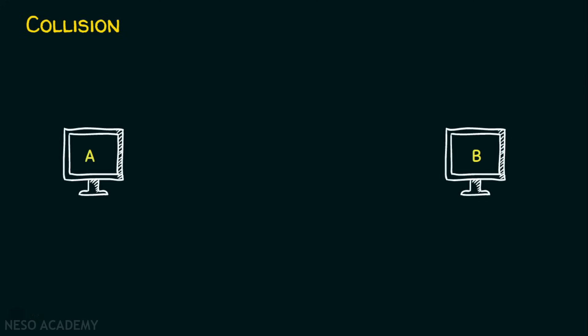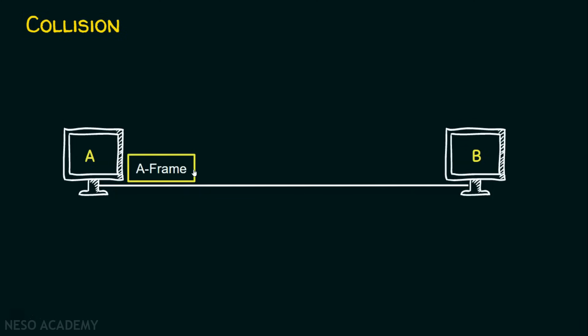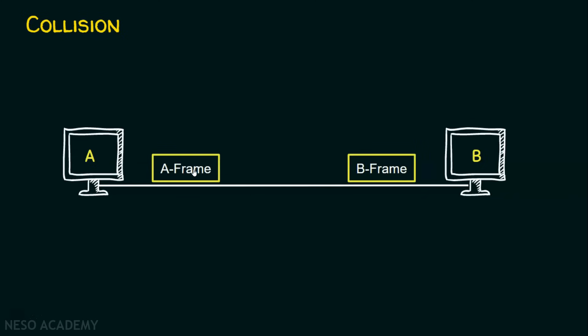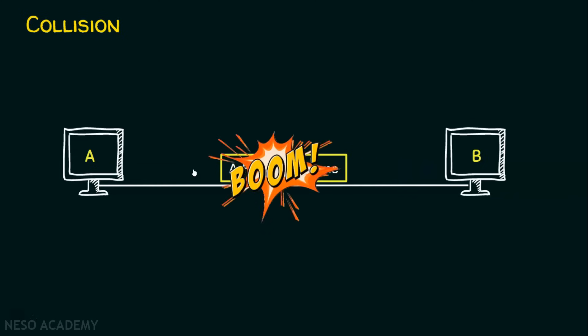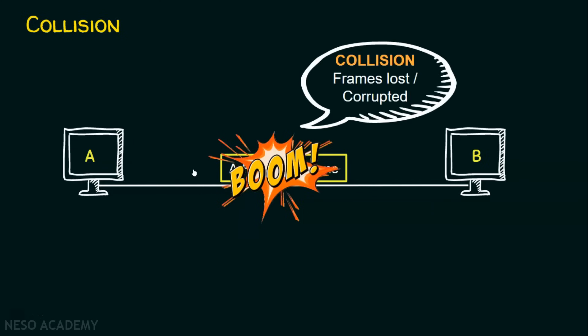Suppose there are two stations, station A and station B, sharing a common medium. If A and B send the data at the same time — A has a frame named A frame, B has a frame named B frame — and both are sending data simultaneously, what happens? Boom! It leads to collision. The frames are either lost or corrupted and become unusable.